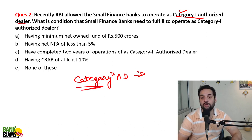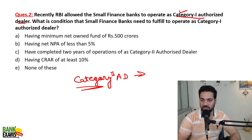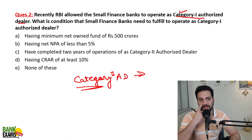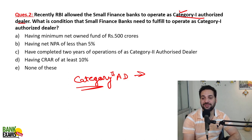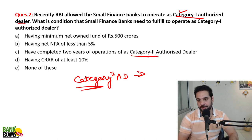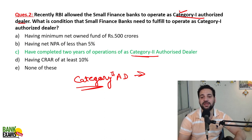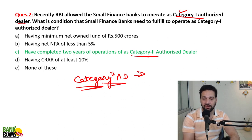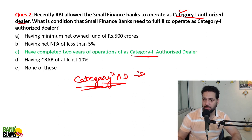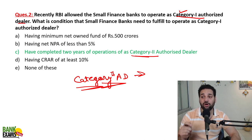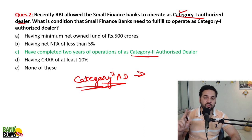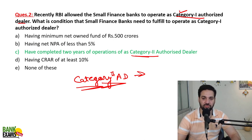Category One Authorized Dealers can provide a lot more services — like checks, LCs, drafts, and all transactions in international trade. All services related to international trade can be provided under Category One. A Small Finance Bank that has been operating for the last two years as a Category Two Authorized Dealer can now work as a Category One Authorized Dealer. So that is the correct answer.